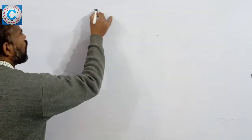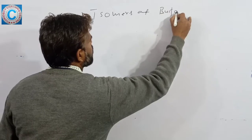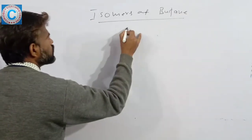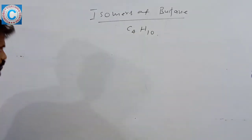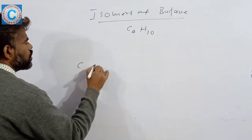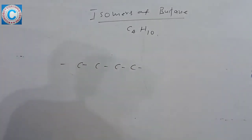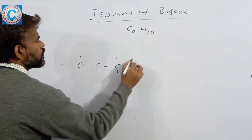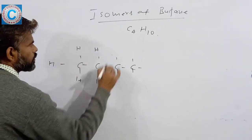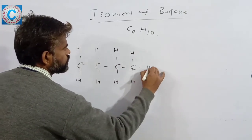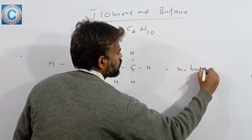First, isomers of butane, that is C4H10. The first structure is N-butane or normal butane.